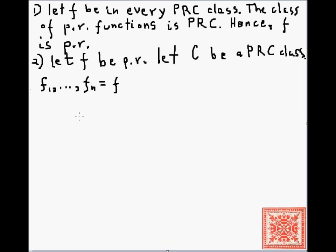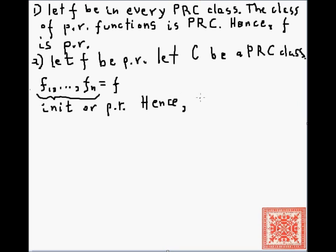Each function in this sequence is either an initial function or a primitive recursive function — in other words, obtained from the initial functions by a finite number of compositions or recursions. Hence f is in C, because C is a primitive recursively closed class, and by definition all functions obtained from the initial functions by a finite number of compositions and primitive recursions will be in C.